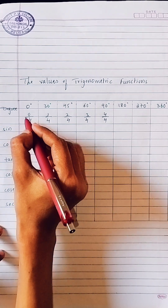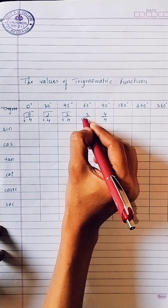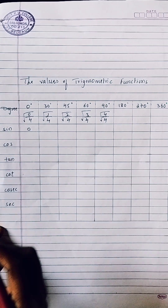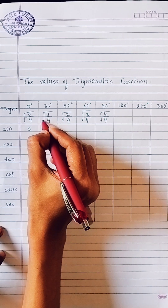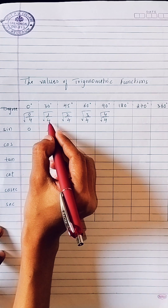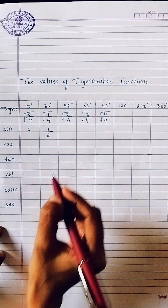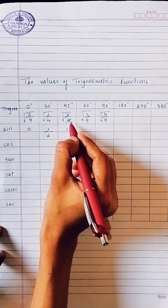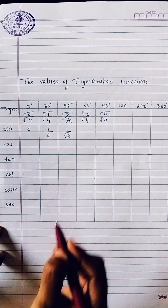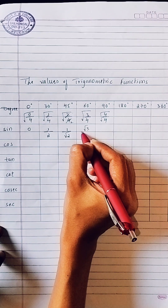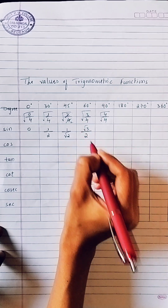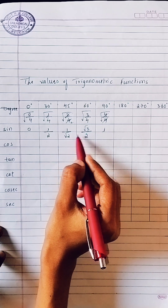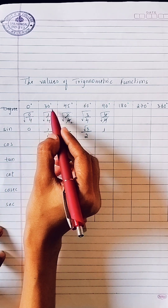Now apply square root for each. What is 0 by anything? It is 0. So root of 0 by 4 is 0. Root of 1 over 4: root of 1 is 1, root of 4 is 2, so we get 1 by 2. Root of 2 by 4 simplifies to 1 by root 2. Root of 3 by 4 gives root 3 by 2. And root of 4 by 4 is 1. So the values of sin 0°, 30°, 45°, 60°, and 90° are: 0, 1/2, 1/√2, √3/2, and 1.